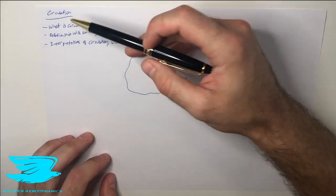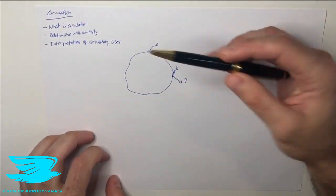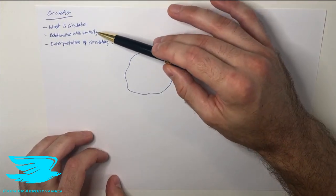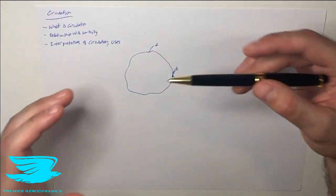What is up amigos? Today we are looking at the circulation. We'll be going through what is the circulation, the relationship with vorticity, and the interpretations of circulation and its uses.